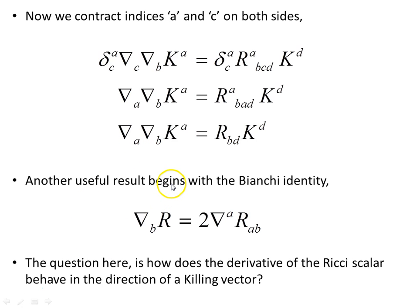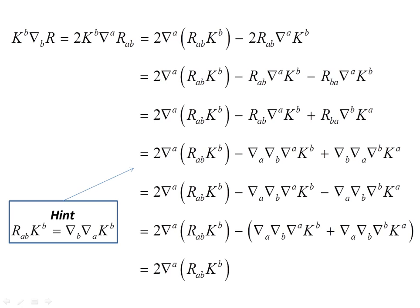Another very important result begins with the Bianchi identity. We want to understand how the derivative of the Ricci scalar R behaves on a manifold where Killing vectors are involved — specifically, how does the derivative of R behave in the direction of a Killing vector. We start with the Killing vector times the derivative of the Ricci scalar from the Bianchi identity. We then rewrite this as the covariant derivative of an object minus another object, using the product rule.